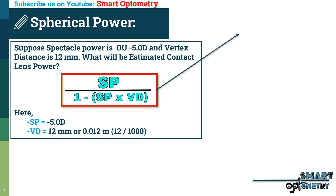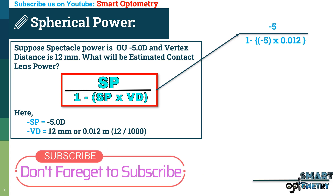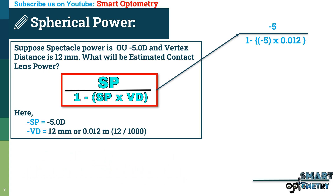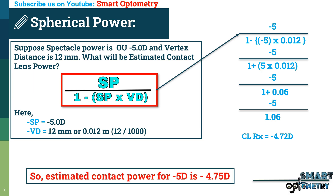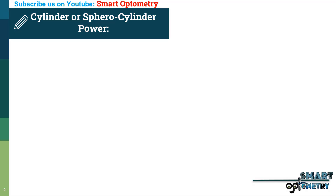According to the formula, contact lens power equals -5 divided by (1 minus (-5) multiplied by 0.012), which equals -5 divided by (1 + 0.06), or -5 divided by 1.06, giving -4.72D. Since contact lens power is available in 0.25 steps, the closest available power is -4.75D.